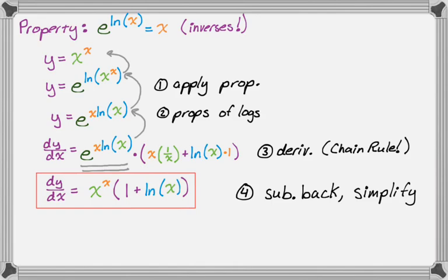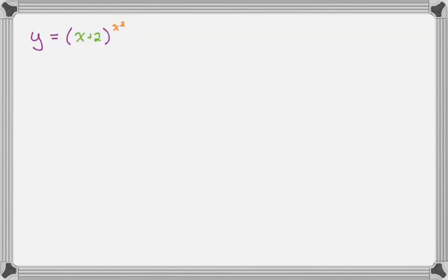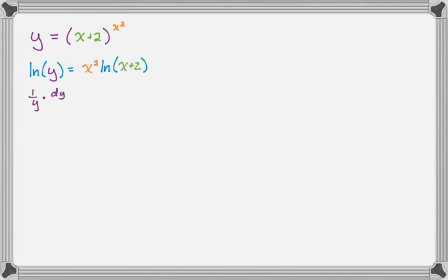Let's say we have y equals the quantity x plus 2 raised to the x squared. I'm going to use the first method on this. First, take the natural log of both sides, and use the property that exponents become coefficients. I'm going to take the derivative of both sides, so 1 over y times dy/dx equals... now I have to use the product rule here.